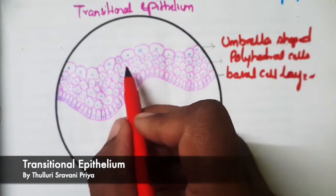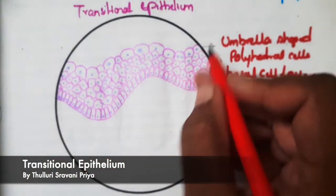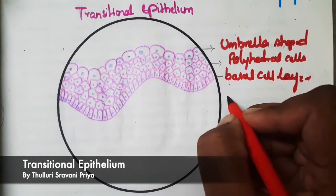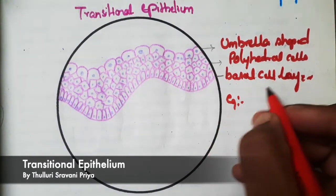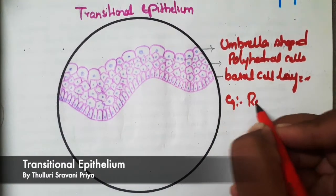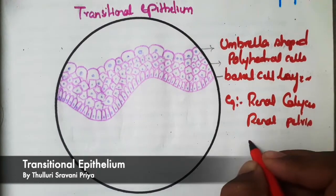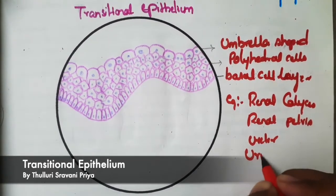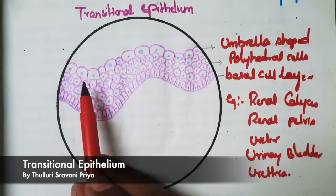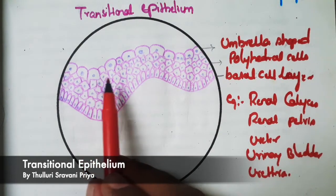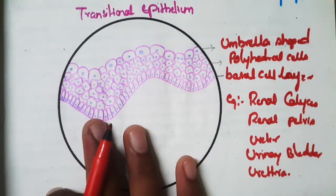Examples of transitional epithelium include the renal calyces, renal pelvis, ureter, urinary bladder, and part of the urethra. However, the variations in cell shape are seen most prominently in the urinary bladder.